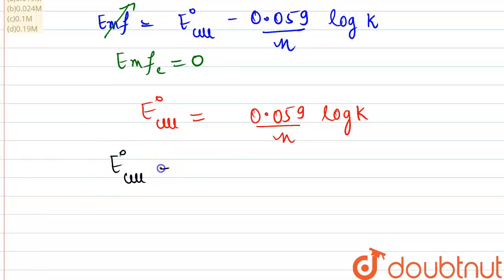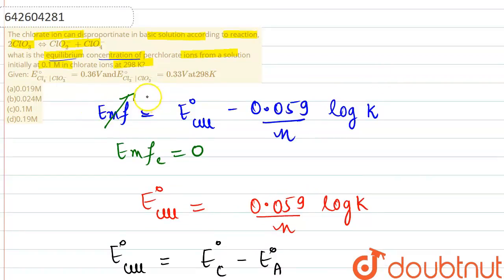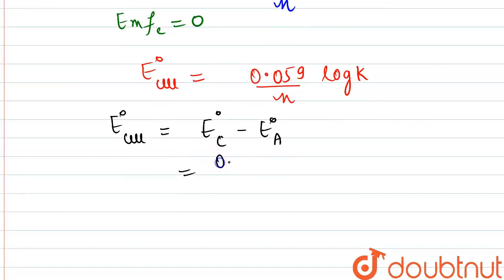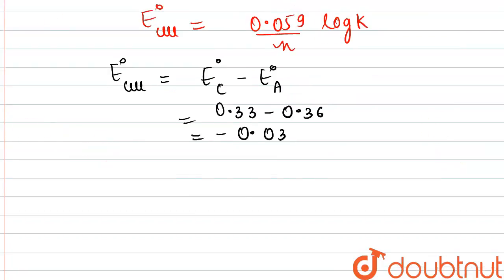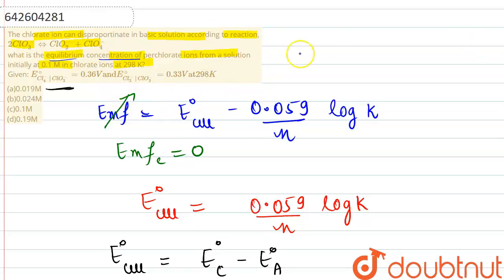E°cell equals E° at cathode minus E° at anode. At the cathode, reduction happens, so we assign that half-reaction there, and the other for oxidation. Substituting the values: 0.33 minus 0.36 gives E°cell equal to minus 0.03 V. The number of electrons involved in the reaction is n equals 2.